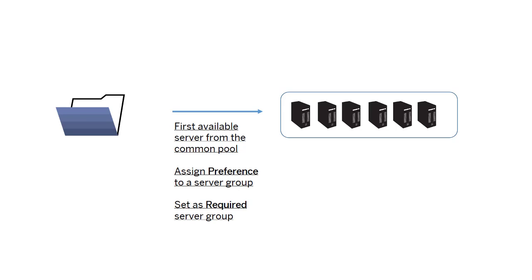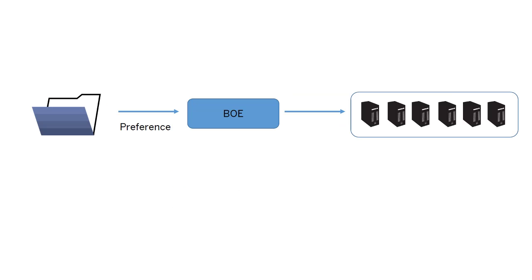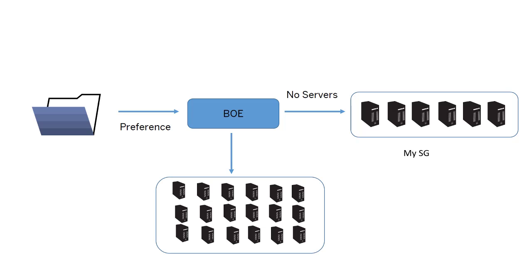By default the BOE chooses the first available server. If you assign preference to a server group, for example mysg, the BOE prefers to look for servers in mysg, and if no servers are available it starts checking in the common pool of servers. But when you assign mysg as a required server group, the BOE looks for servers only in mysg, and if no servers are available it doesn't check back in the common pool.